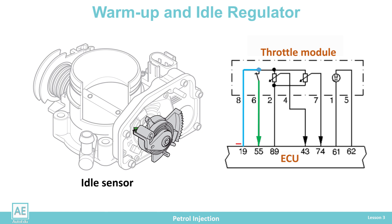When the throttle closes the button, minus power is applied to the ECU as information that it is currently in idle mode and regulation is starting. In the event of a key failure, the ECU takes data from the throttle position sensor and can recognize when it is idling.